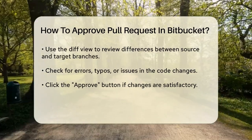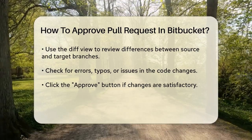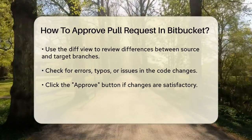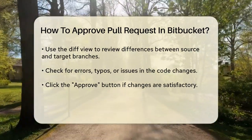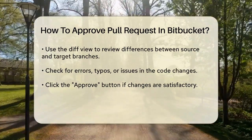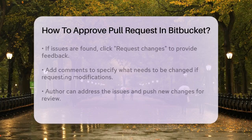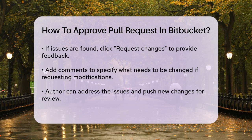If everything looks good, you can approve the pull request. To do this, you'll see buttons at the top of the pull request page labeled Approve and Request Changes. Click the Approve button to indicate that you've reviewed the changes and they are ready to be merged into the target branch.